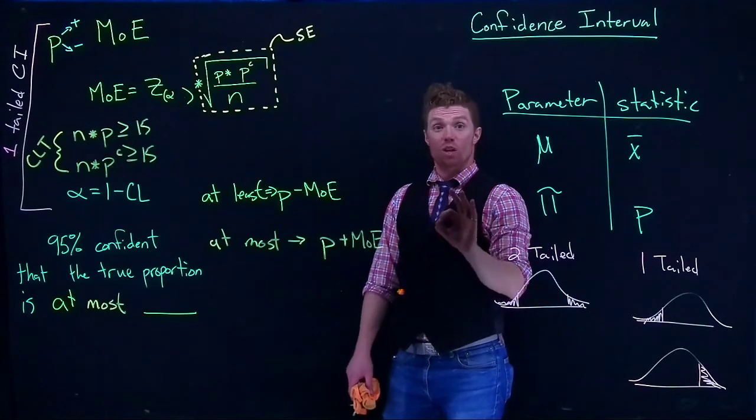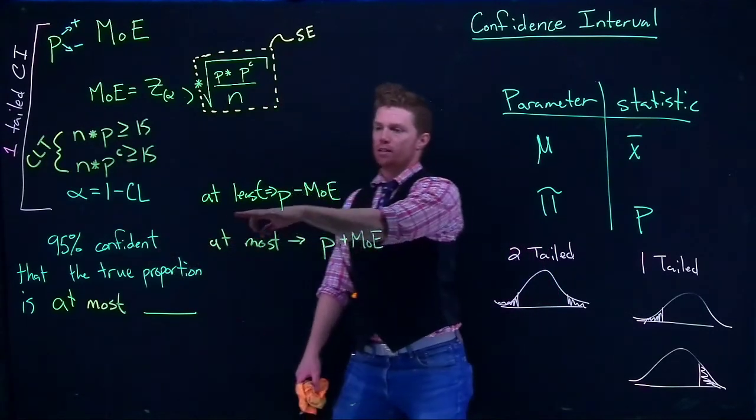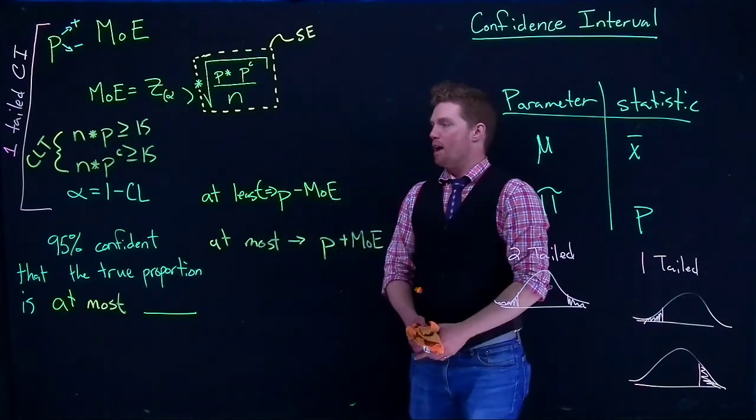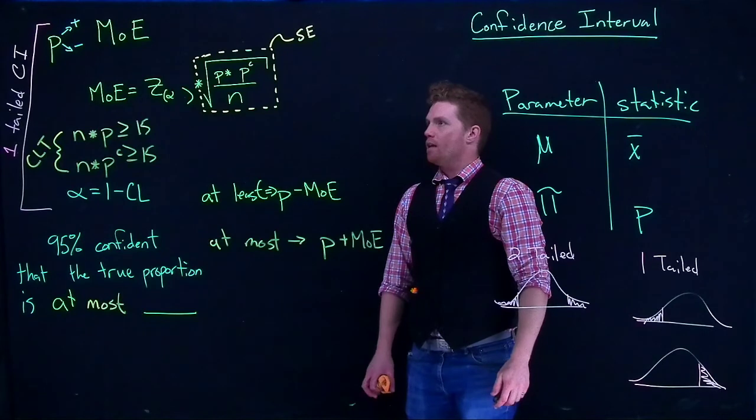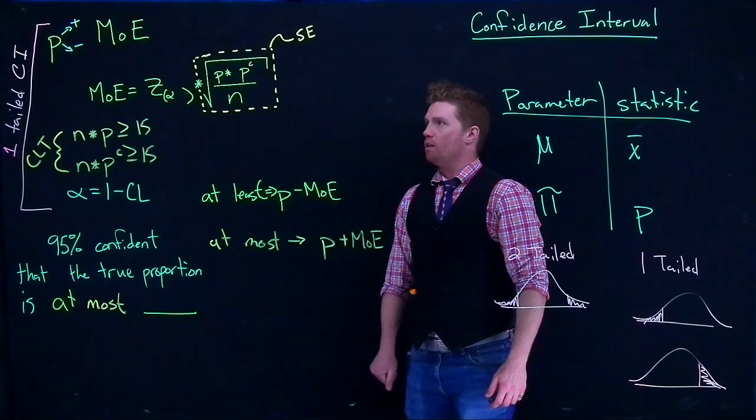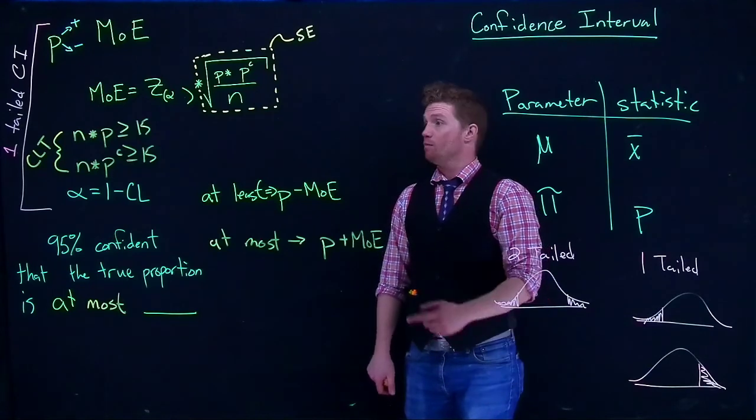And the way that we know which one we're going to be doing is basically what are we trying to say? Are we trying to say that it's at least some value or are we trying to say that it is at most some value? And we will, in a future video, do an example of how we can actually plug in our values and get an answer for this.